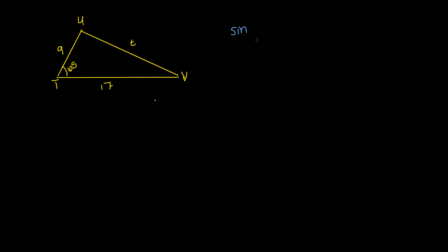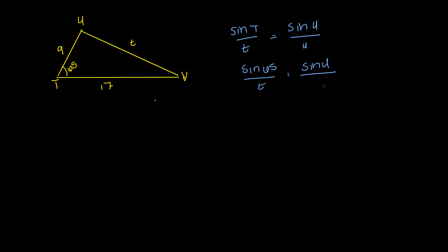Using the law of sines, I could do sine of T divided by little t equals sine of U divided by u. So I'm looking at sine of 65 divided by t equals sine of U divided by 17. But it's kind of hard because now I still have two variables that I need to solve for.